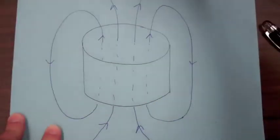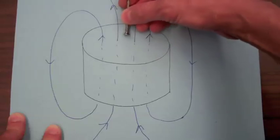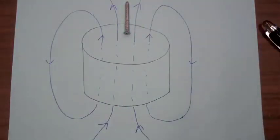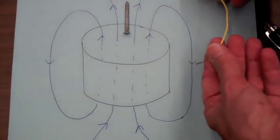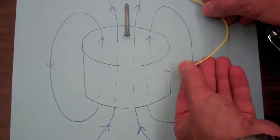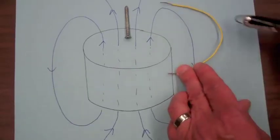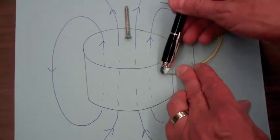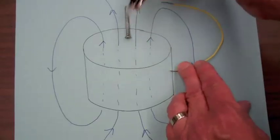Now what we're going to do is we're attaching the screw to this top end here, and then I'm taking the wire and attaching it to the top of the battery and to the side of the magnet. So the current flow is going to be from the edge of the magnet to the center and then up through the screw.